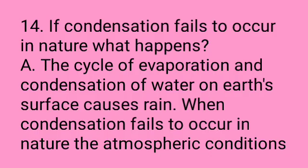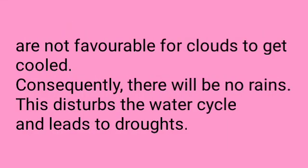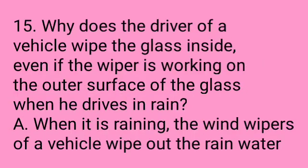Fourteenth question: If condensation fails to occur in nature, what happens? Answer: The cycle of evaporation and condensation of water on earth's surface causes rain. When condensation fails to occur in nature, the atmospheric conditions are not favorable for clouds to get cold. Consequently, there will be no rains, which disturbs the water cycle and leads to droughts.